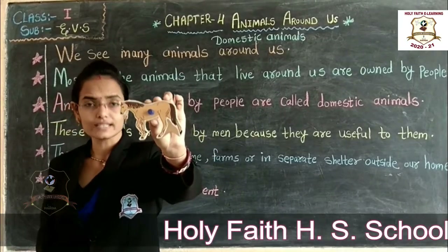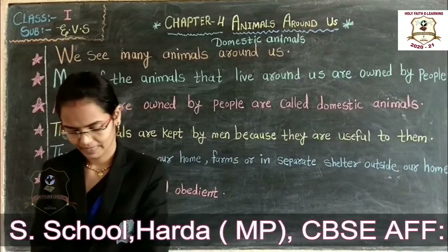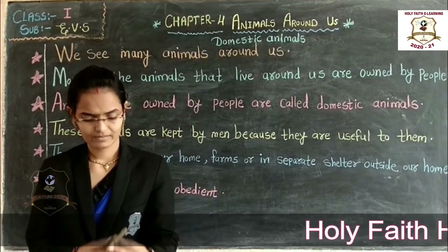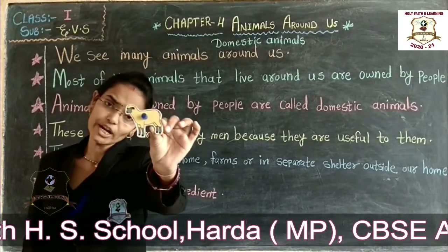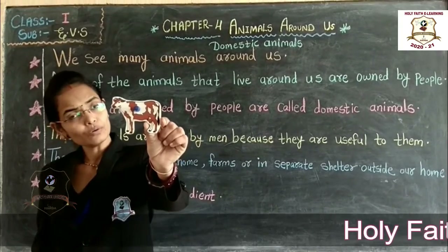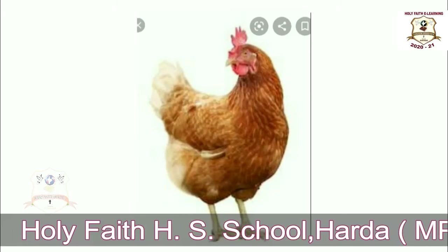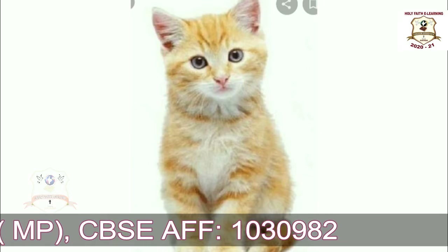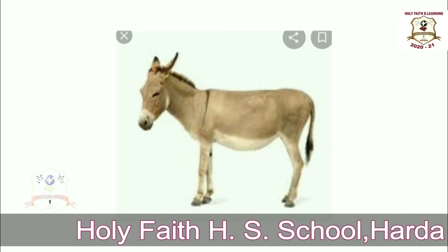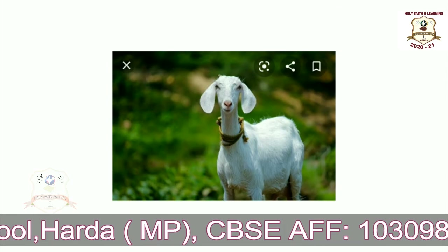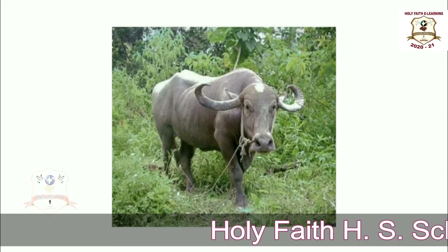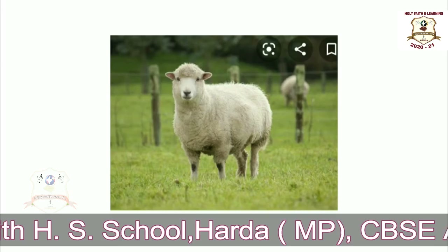This is a horse. This is a camel. This is a sheep. This is a cow. This is a hen. This is a cat. This is a donkey. This is a goat. This is a rabbit. This is a buffalo. These are domestic animals.